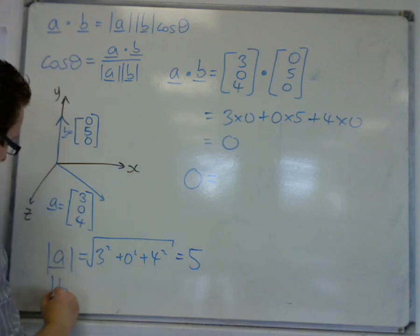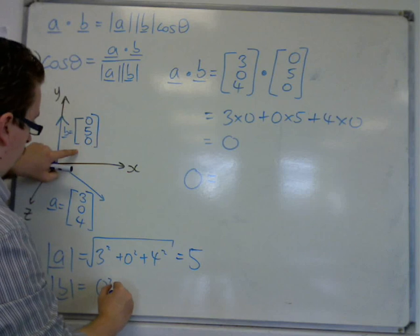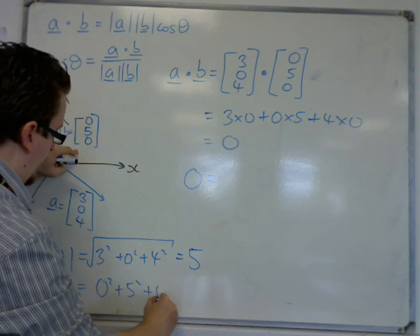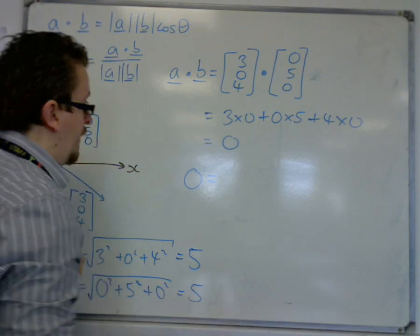And then mod b is equal to 0 squared plus 5 squared plus 0 squared, square root of, which is also just 5.